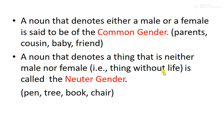Non-living things are called neuter gender. There are many non-living things, for example: pen, tree, book, chair, table, spoon, plates — many things. Every item present in your house that is non-living will come under neuter gender.